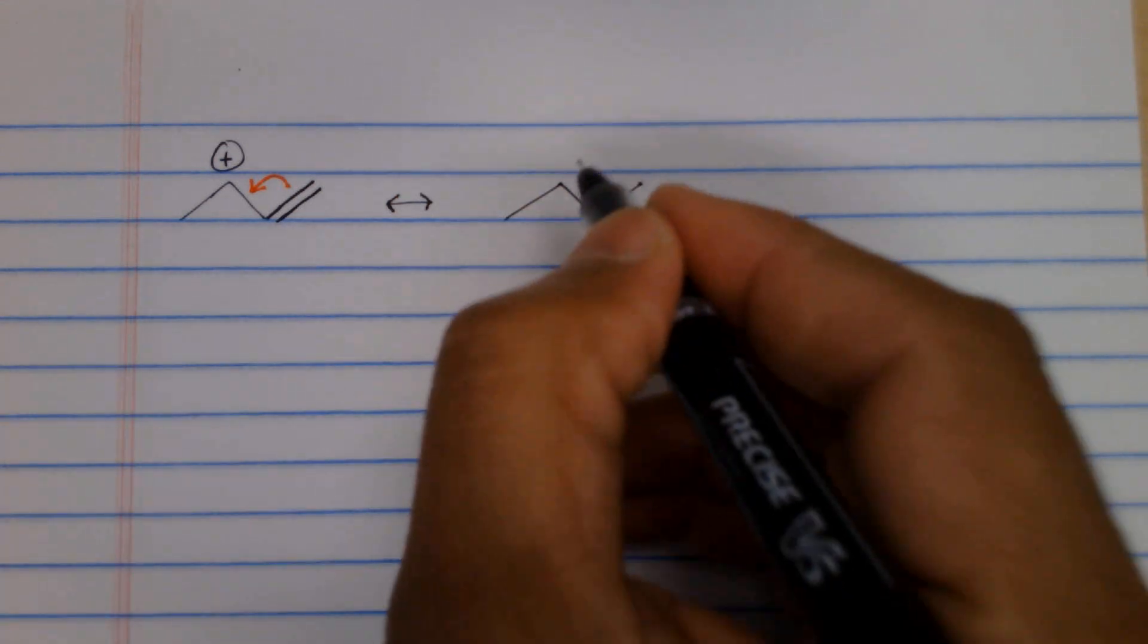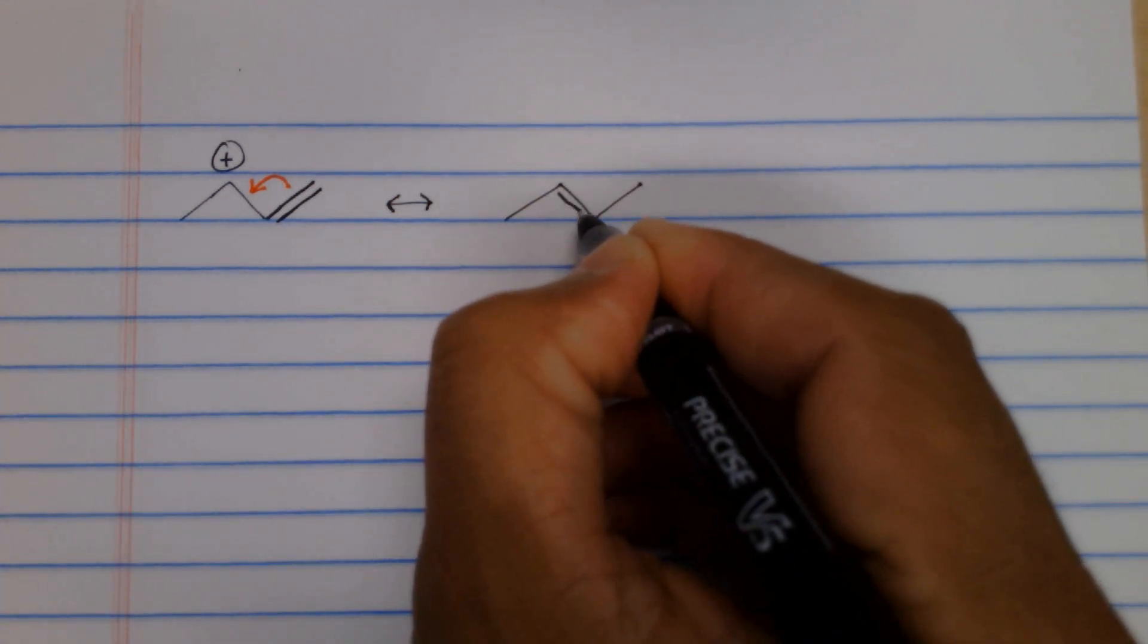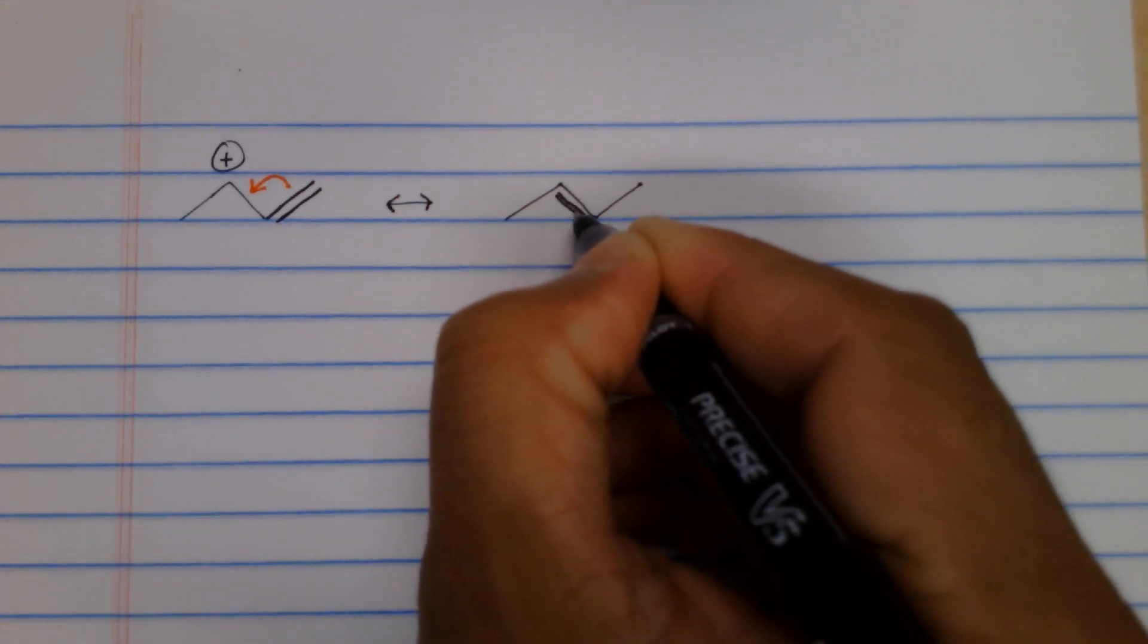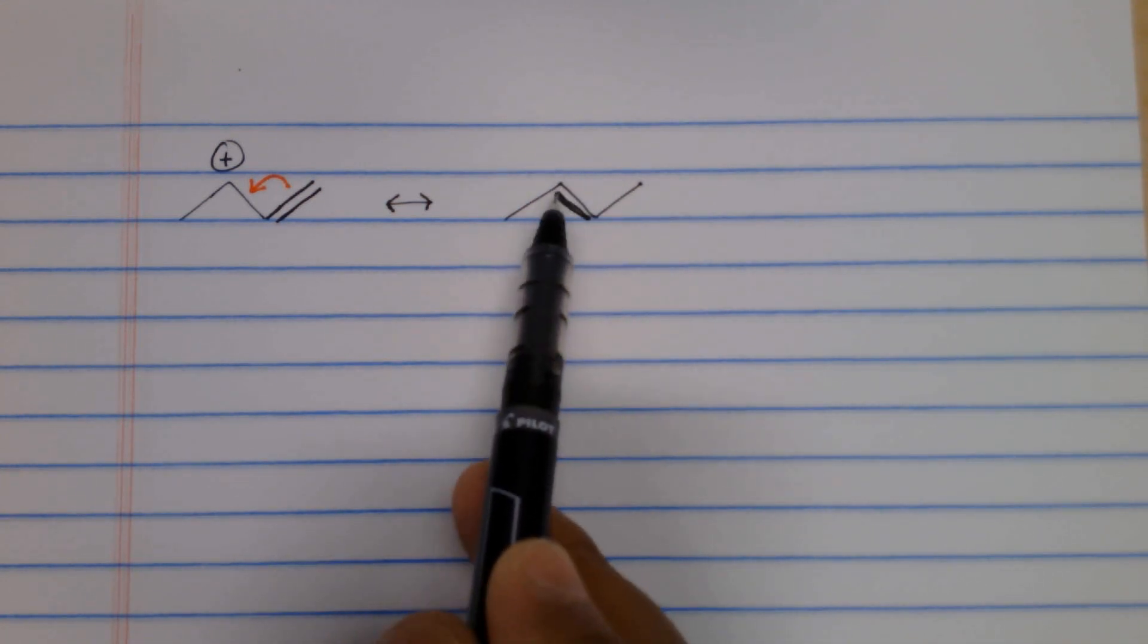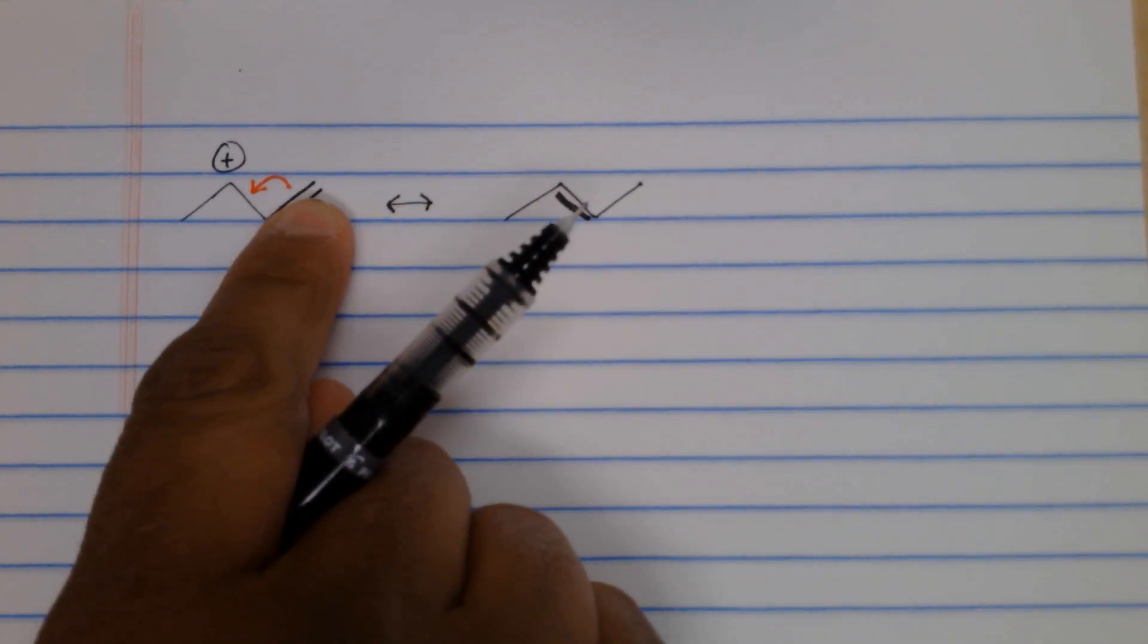And so right here we'll draw that extra bond. So remember that carbon still has its hydrogen. It's not drawn here but we know it's there. That carbon now has four bonds and the carbon at the end.